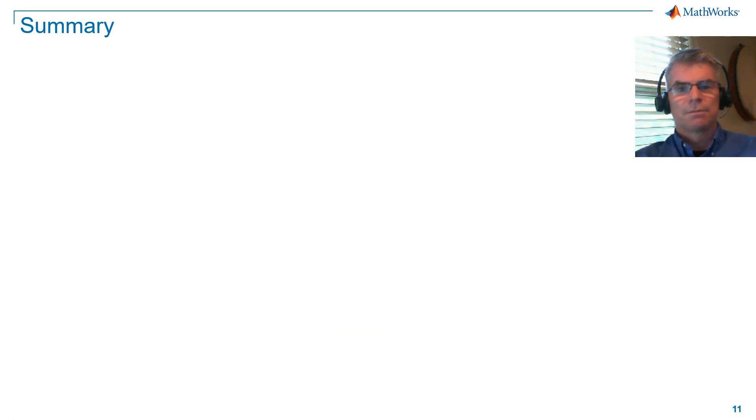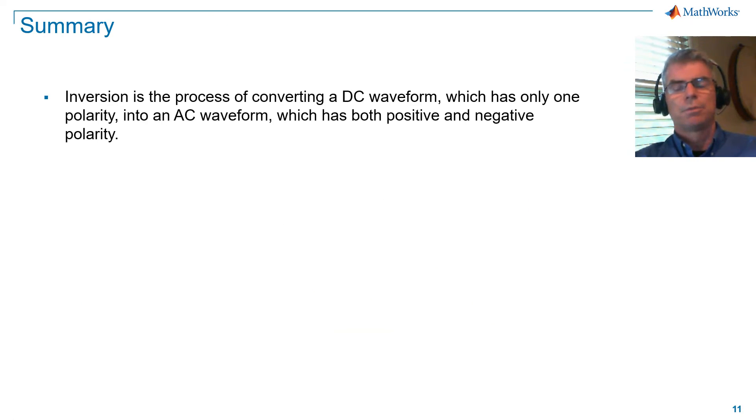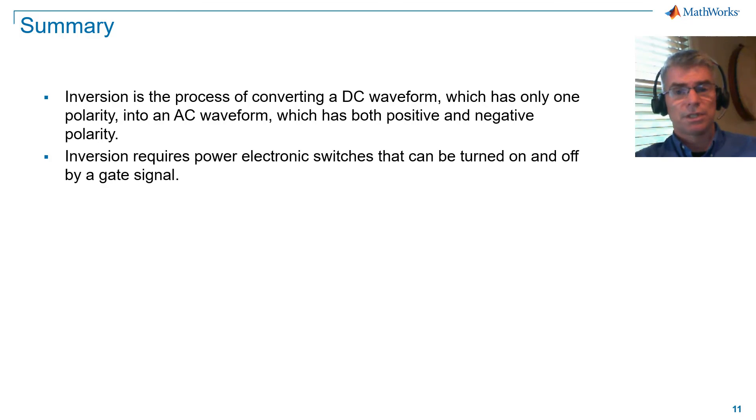So in summary, inversion is the process of converting a DC waveform, which has only one polarity, into an AC waveform, which has both positive and negative polarity. Inversion requires power electronic switches that can be turned on and off by a gate signal.